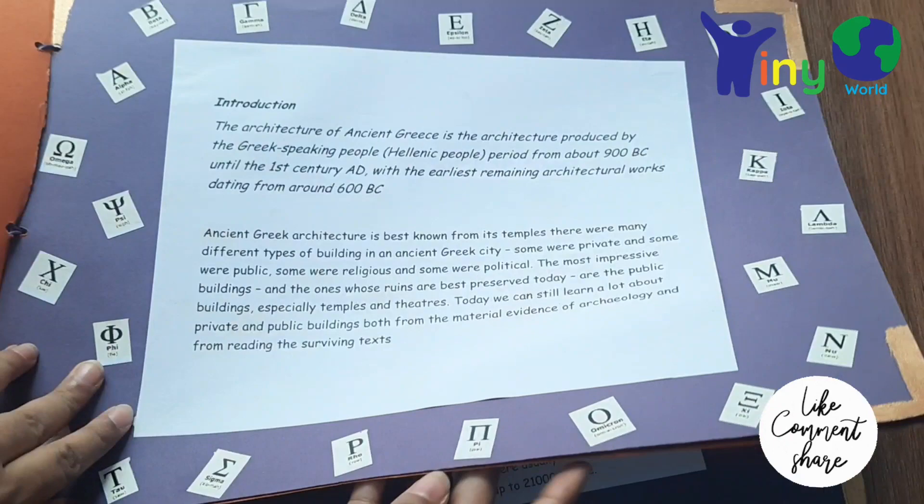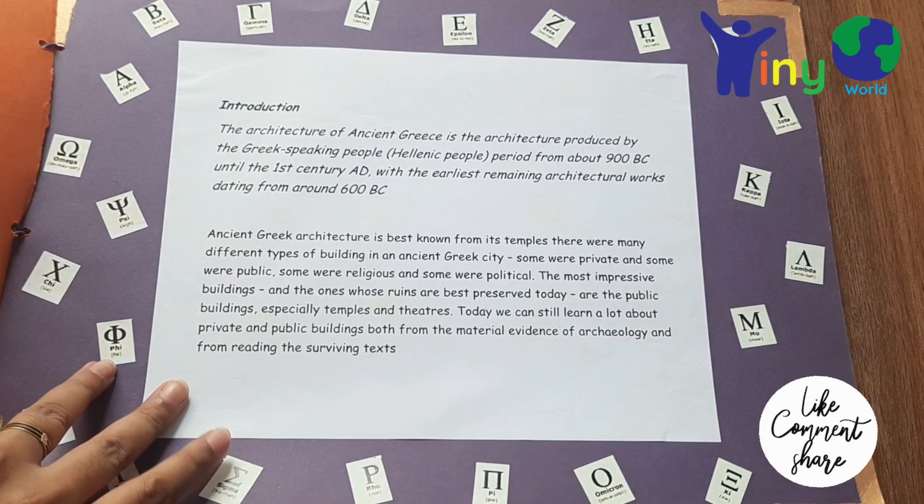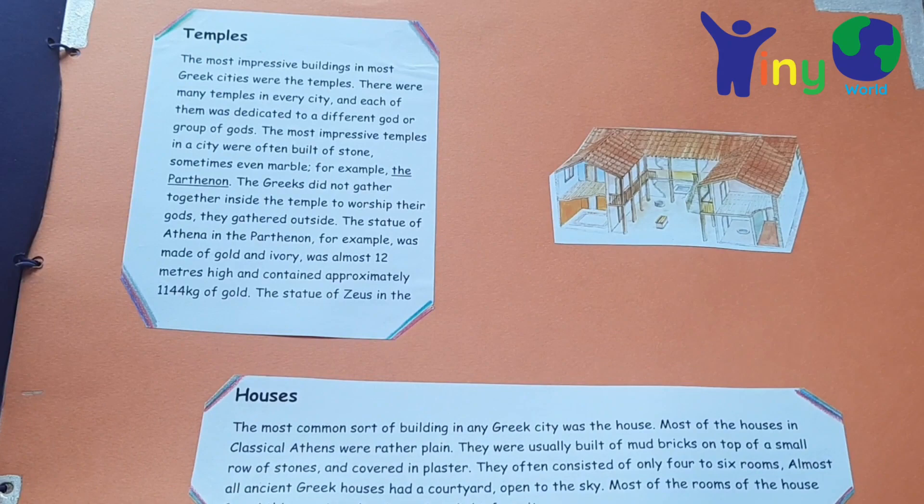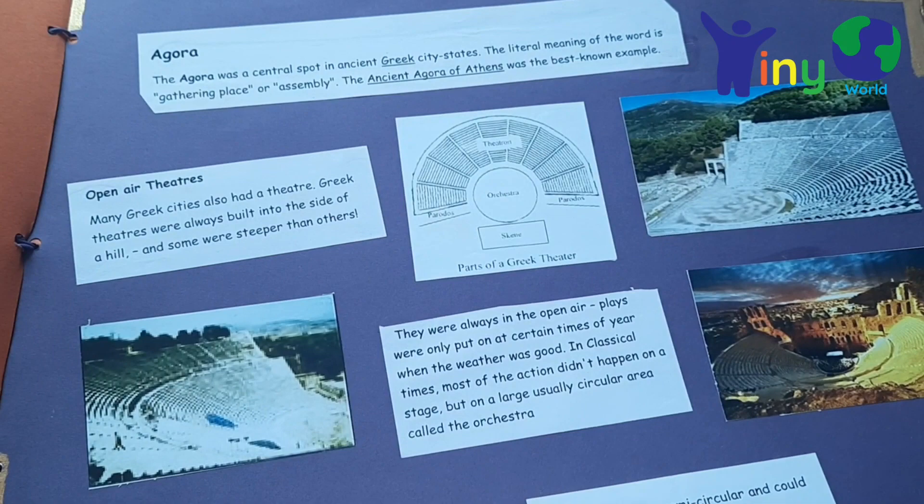In one city, the temple is built for a god and goddess. This is a part of Athens. Next, we will talk about the Greek open-air theater. This open-air theater is in a semi-circle shape and has 20–30 seat capacity. Next, we will talk about types of order.